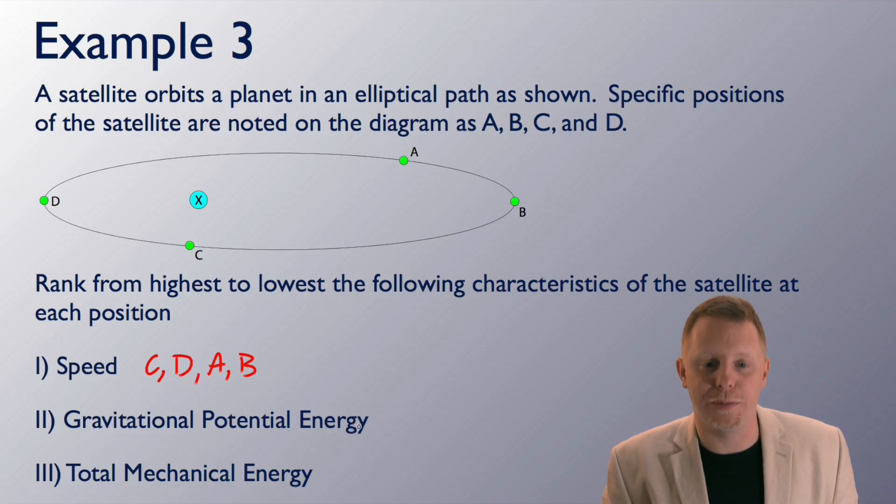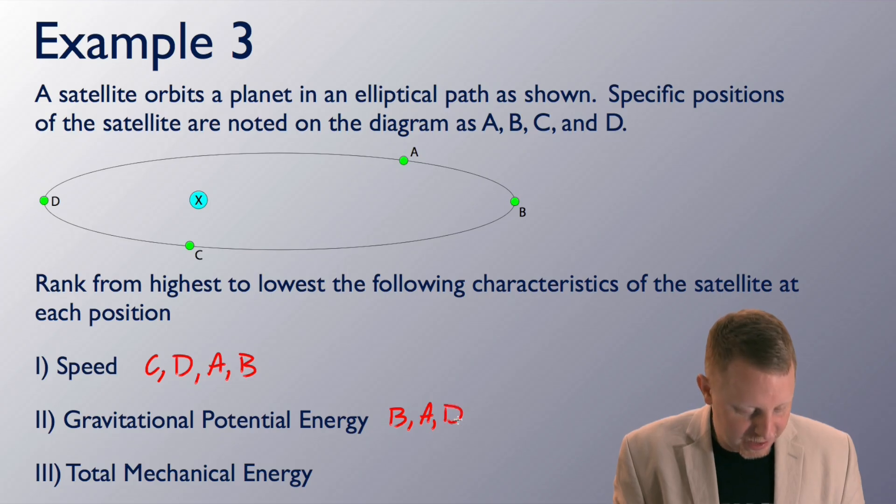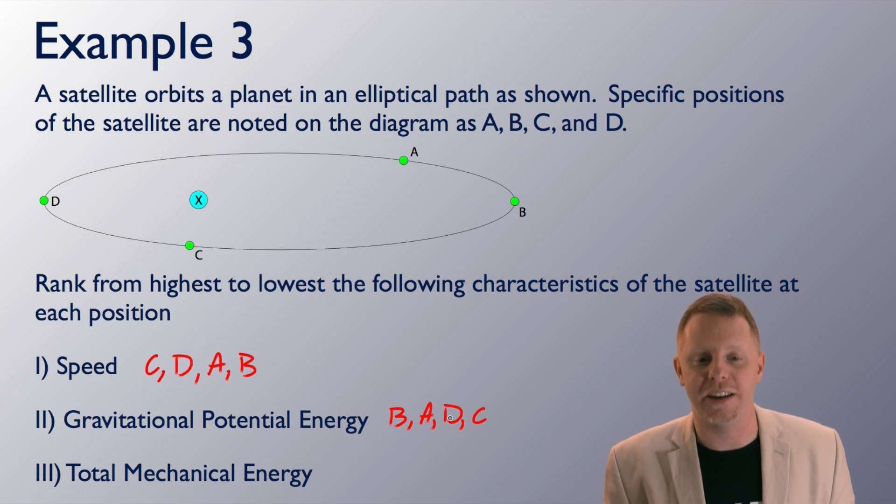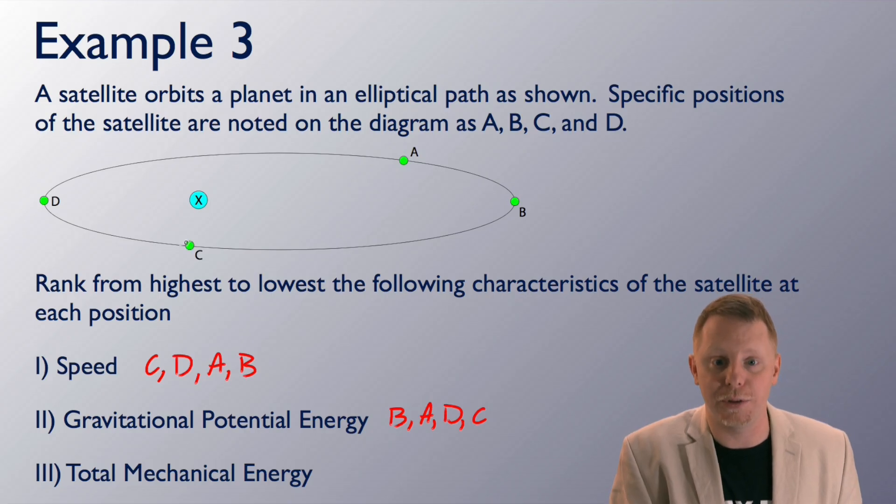How about gravitational potential energy? Well, we're going to have the greatest gravitational potential energy when we're the furthest. So, that's going to be B, then A, then D, then C. And that's from our conservation of energy and understanding of gravitational potential energy. If you've got the highest kinetic over here, this must be the lowest gravitational potential energy.